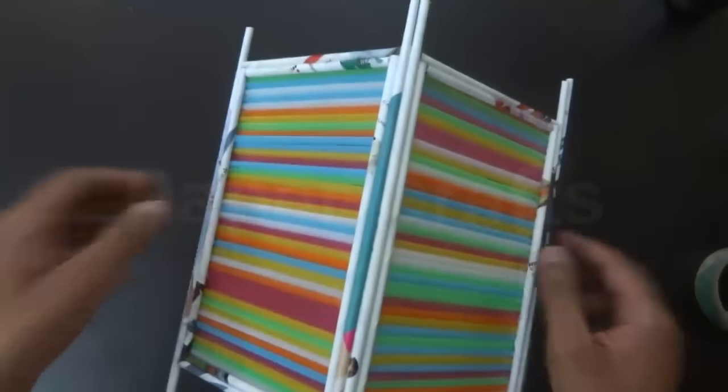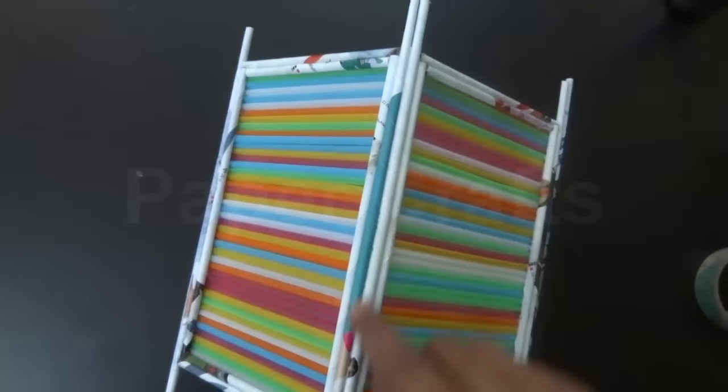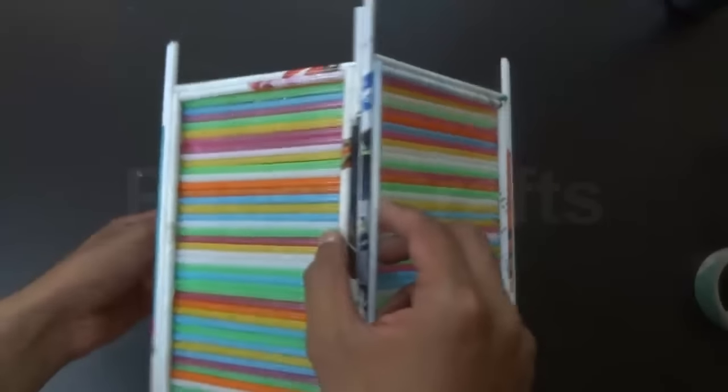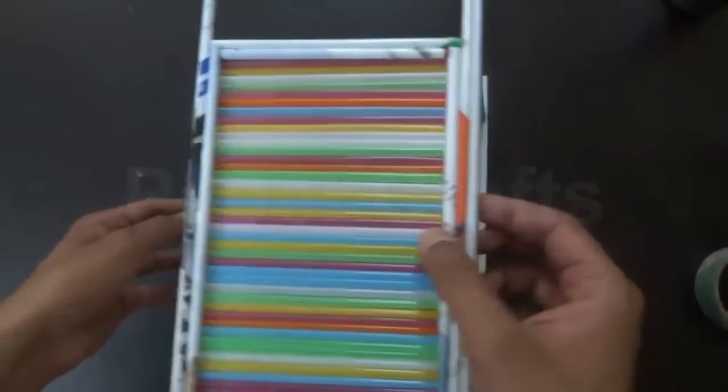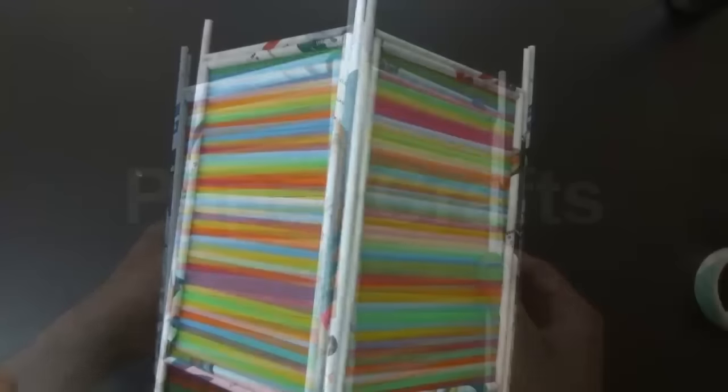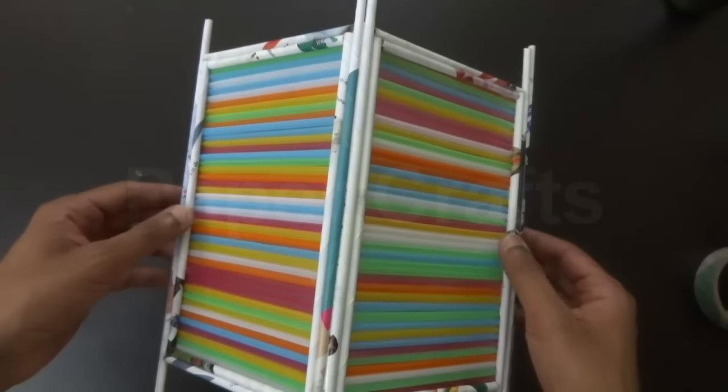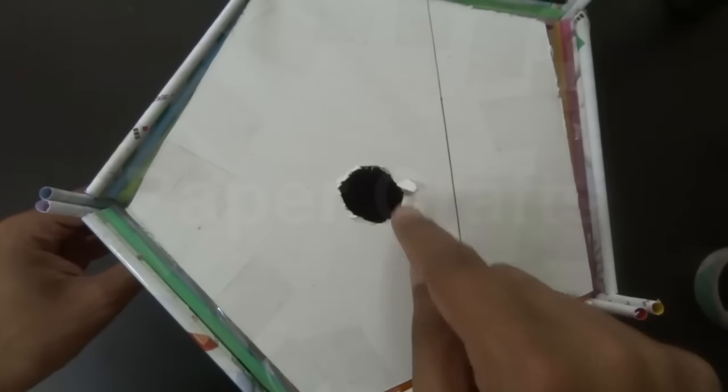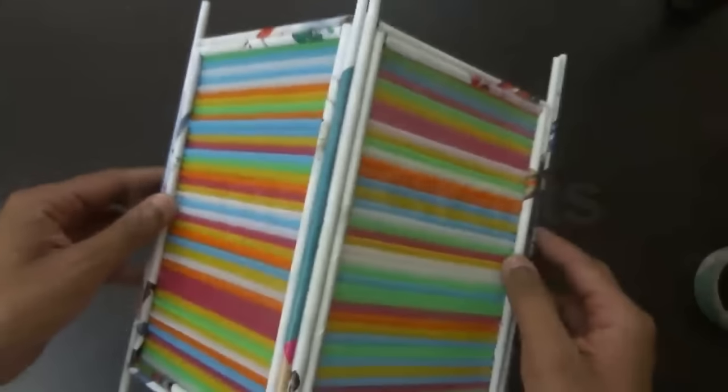Make sure you add glue to the longer sections as well to give strength to the entire lampshade. Now we just need to install a lightbulb inside this hole on the top to complete the lampshade.